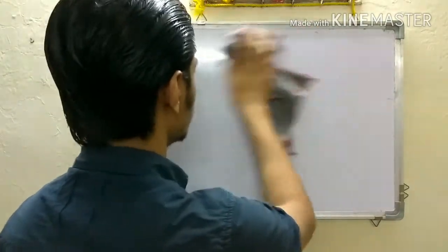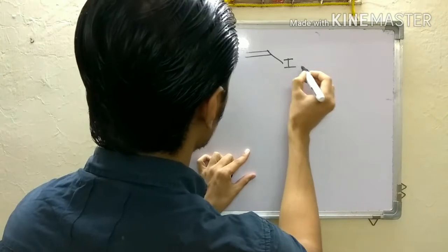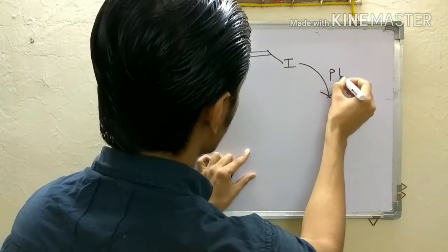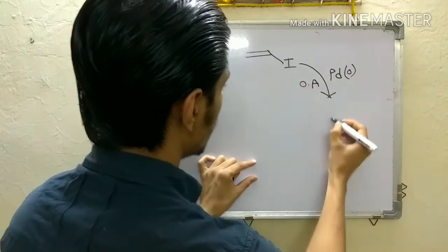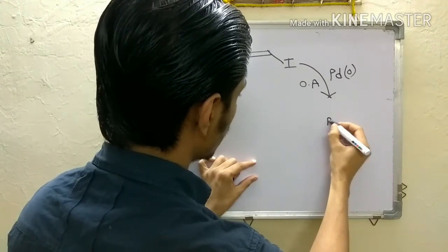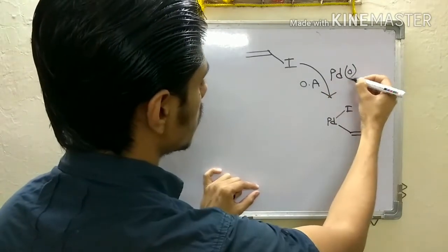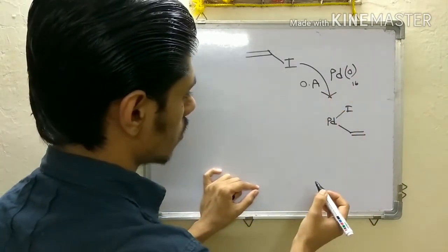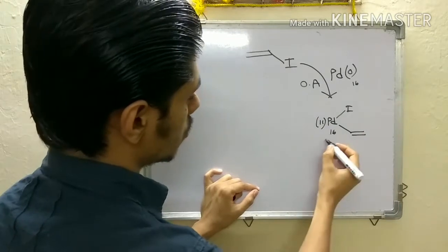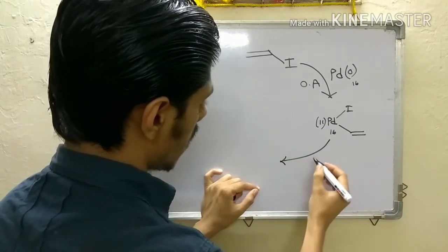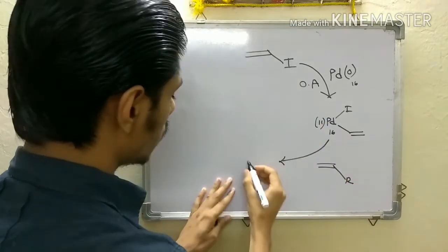Now what is the mechanism? I will briefly discuss the catalytic cycle. Let's say this is your vinyl halide. The first step is oxidative addition — when you add palladium(0) catalyst, this vinyl halide undergoes oxidative addition at the palladium center. So you get this complex. It is a 16-electron complex. After oxidative addition, it remains 16-electron but the oxidation state changes from zero to plus two. The second step: your alkene is present and it will coordinate to this palladium.